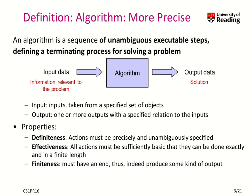Now let's take this high-level definition of algorithm and frame it for our purpose. What we will say here in this lecture is: an algorithm is a sequence of unambiguous executable steps that define a terminating process for solving a problem. So we have basically input data, which is all the information relevant for a problem. Then we run the algorithm and we generate an output, which is our solution. The input is taken from a specific set of objects and the output relates to the input and is what we expect from the algorithm.